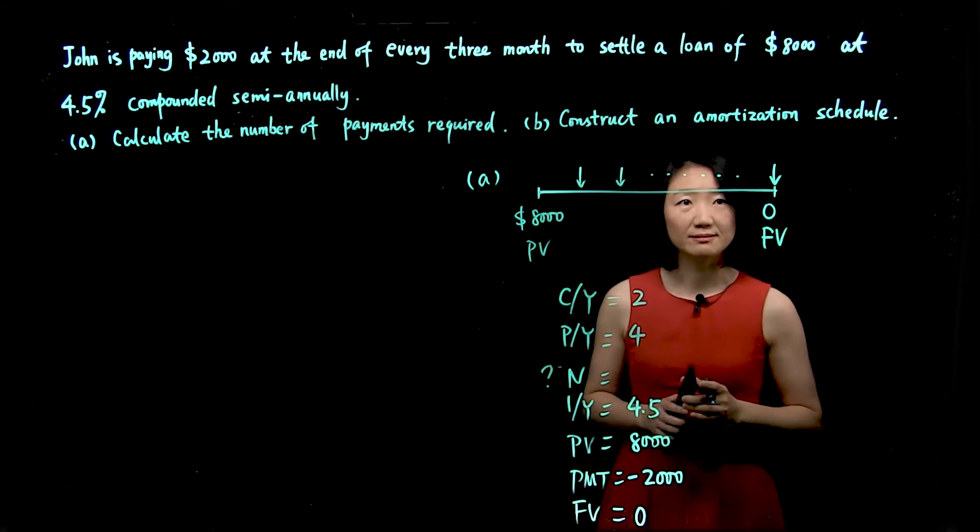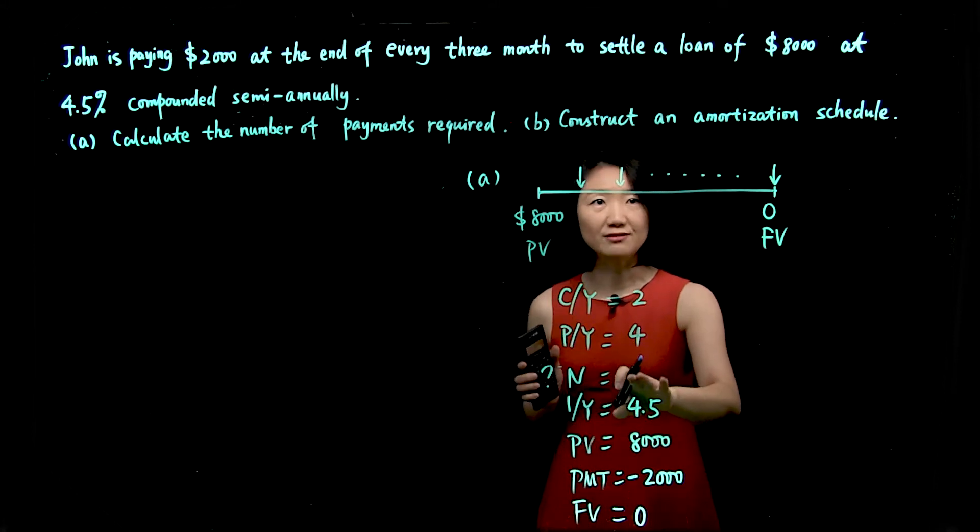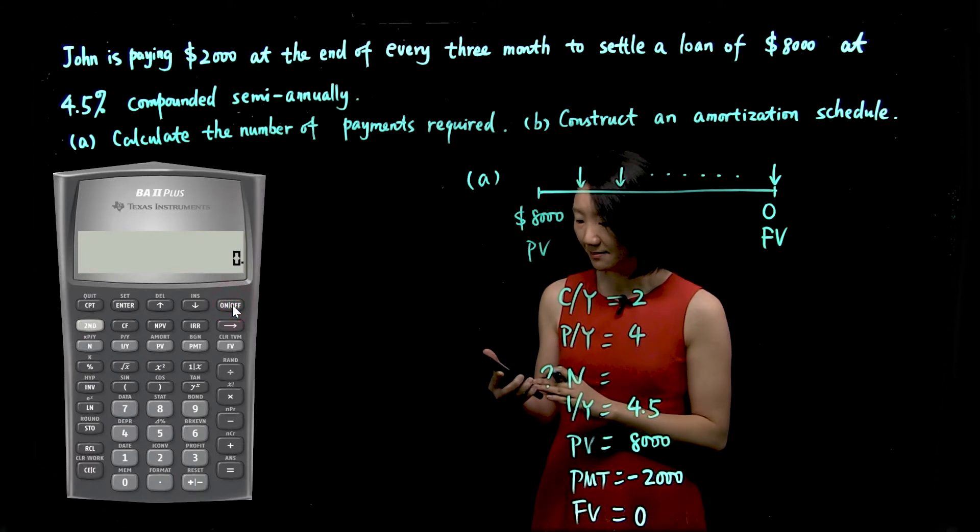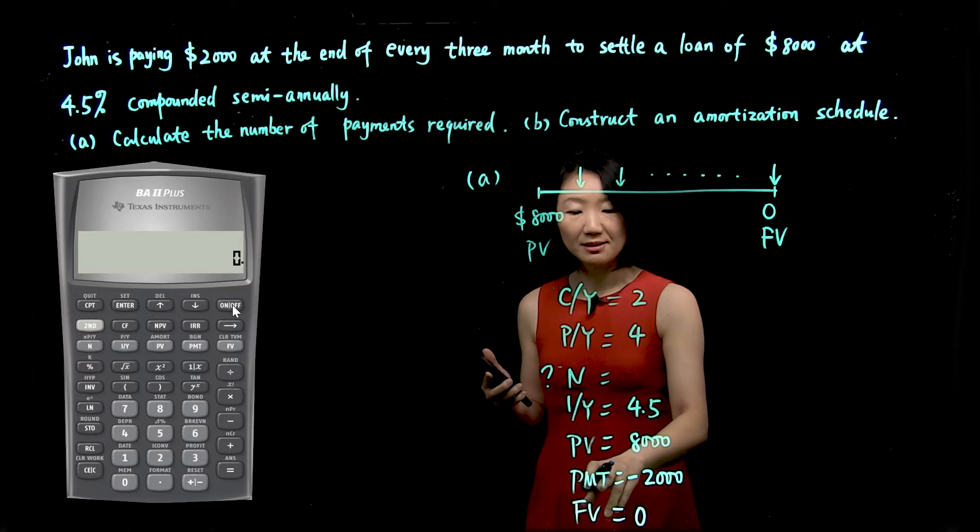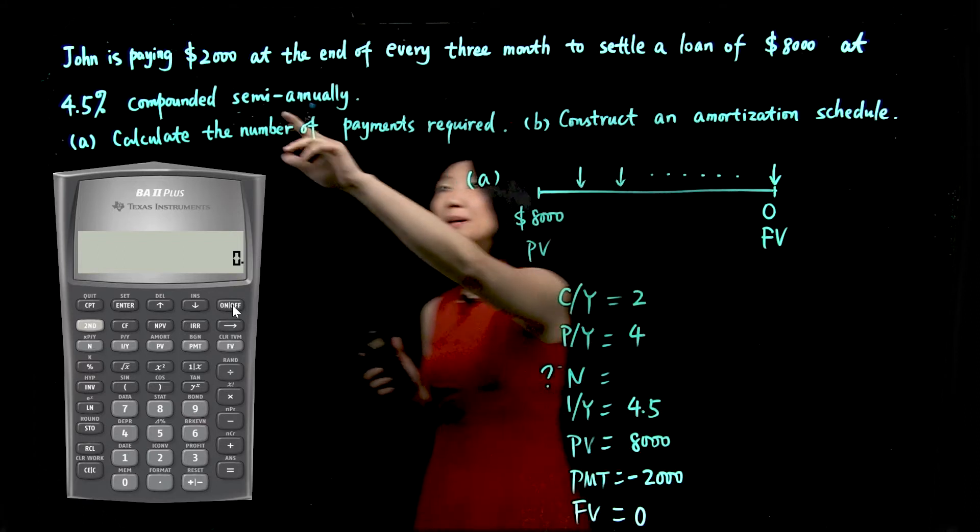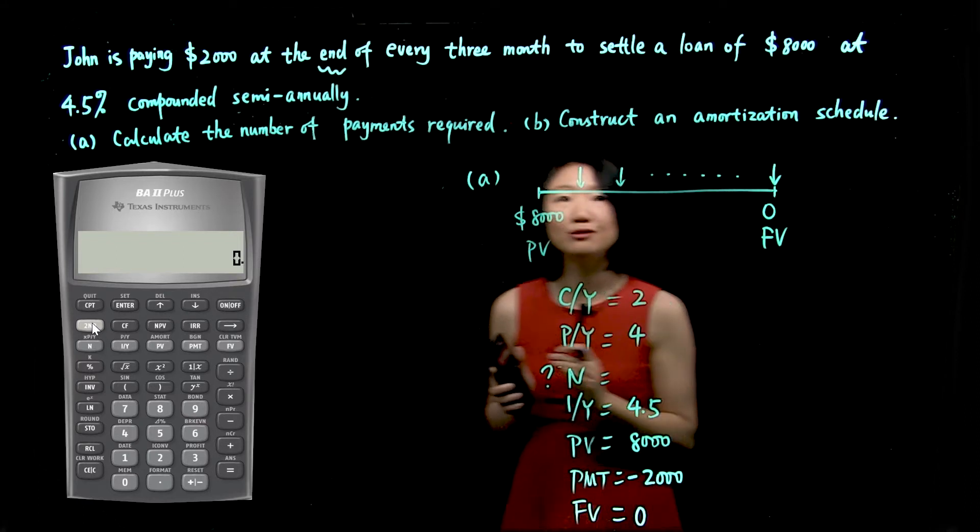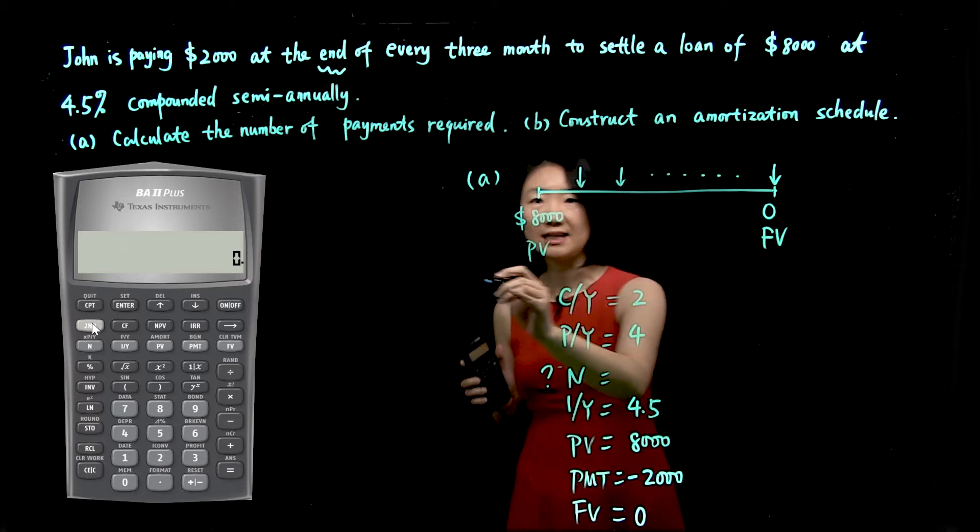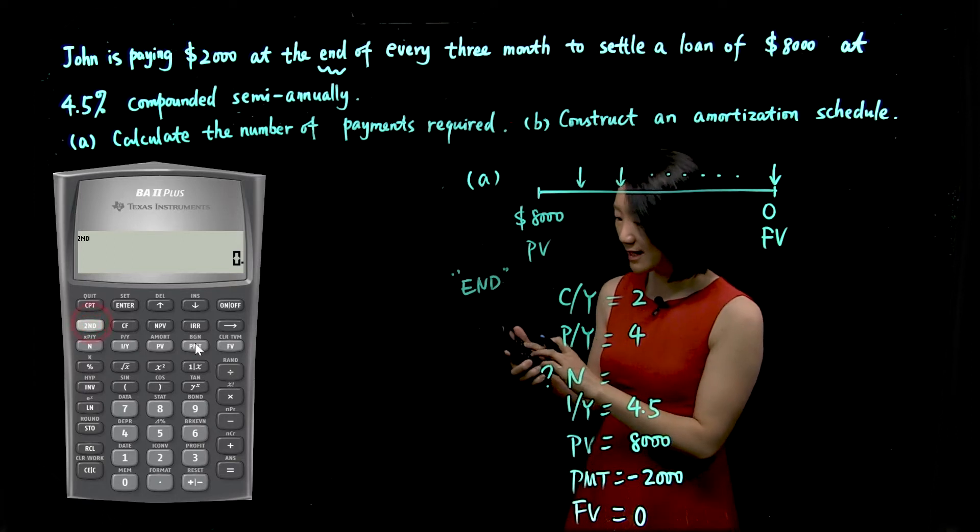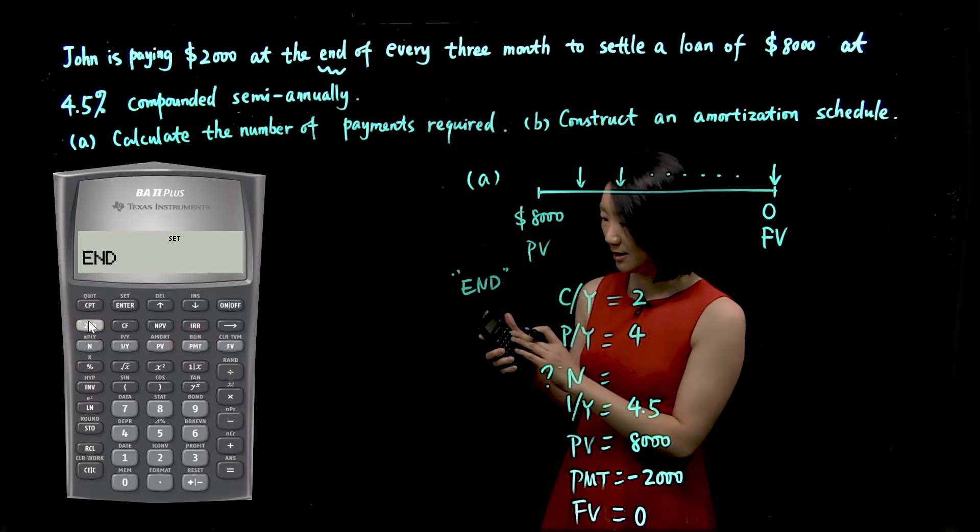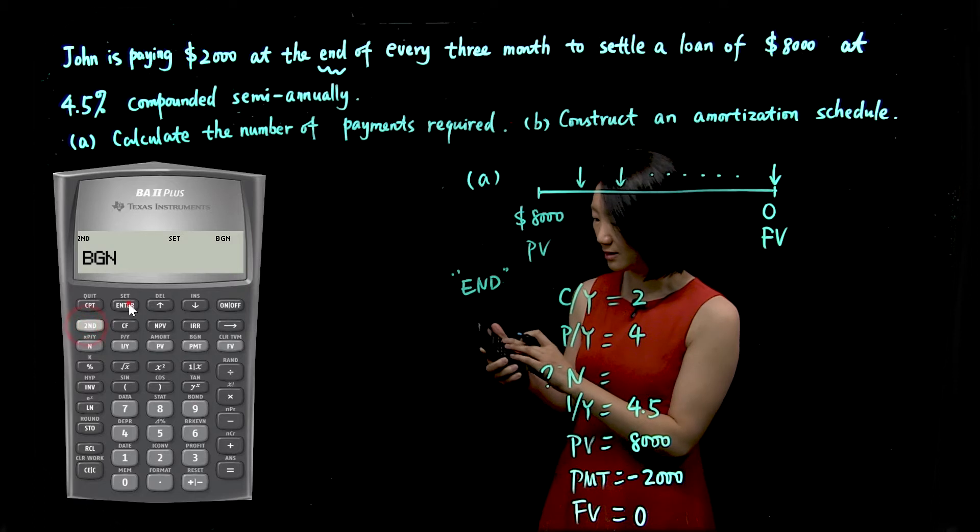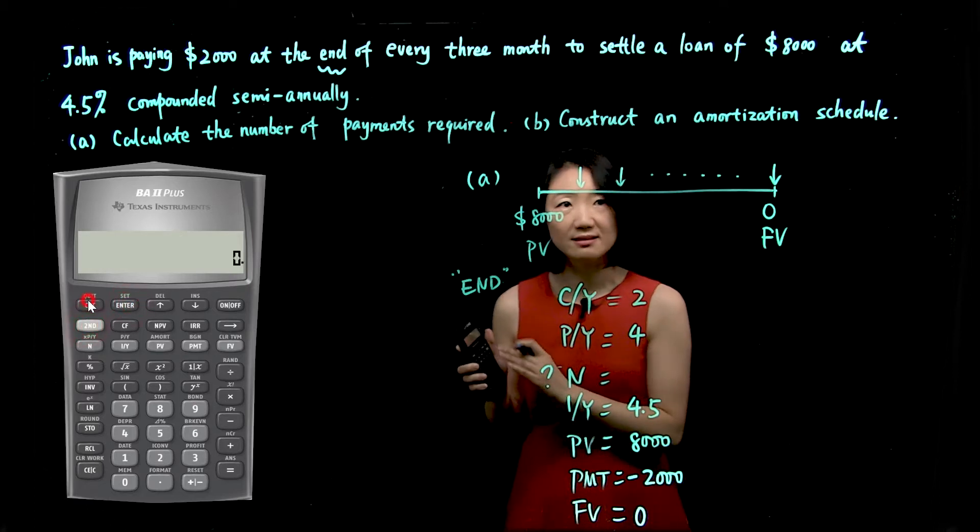Now we have all the information. We're ready to use the calculator to solve the N. Let's push the on and off button. We'll turn the calculator on. Again, because we have PMT involved, make sure your calculator is set at the right mode. The payment happened at the end of every three months, so make sure your calculator is at end mode. If you need to change it, you go to second BGN. You can change it through second enter, and it will change it back to end mode. Push second quit to exit the mode.